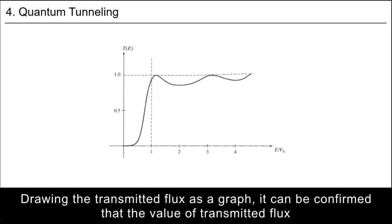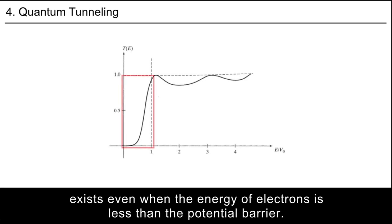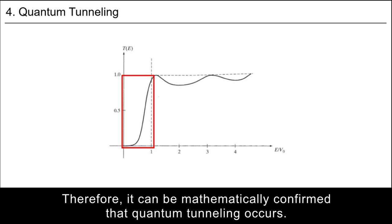Drawing the transmitted flux as a graph, it can be confirmed that the value of the transmitted flux exists even when the energy of electrons is less than the potential barrier. Therefore, it can be mathematically confirmed that quantum tunneling occurs.